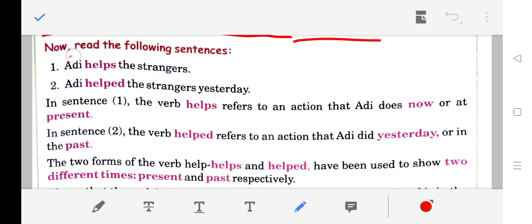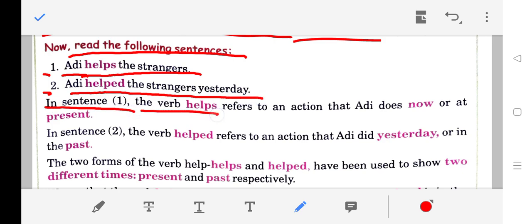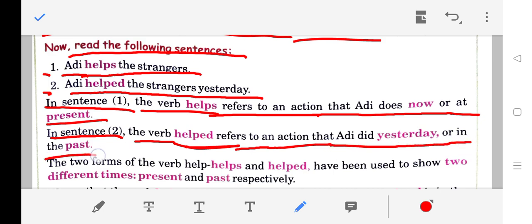Now, read the following sentences. First: Adi helps the strangers. Second: Adi helped the strangers yesterday. In sentence one, the verb 'helps' refers to an action that Adi does now or at present. In sentence two, the verb 'helped' refers to an action that Adi did yesterday, or in the past.